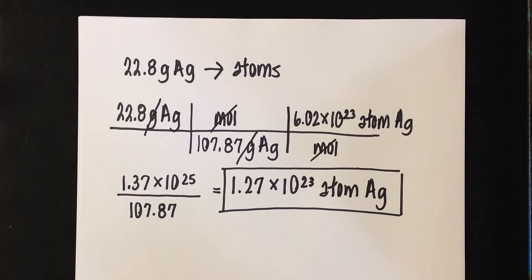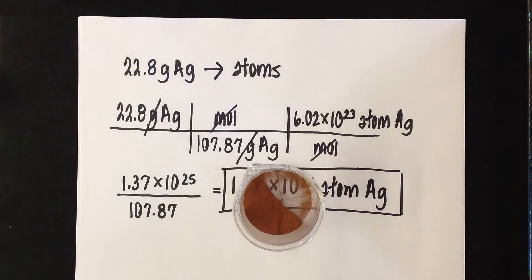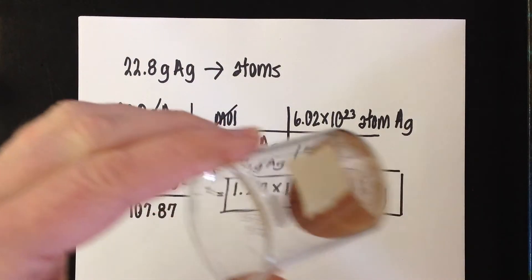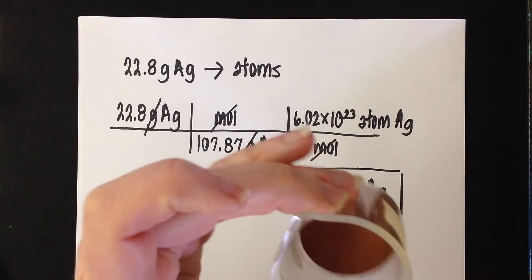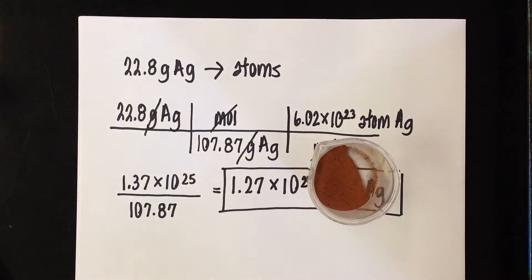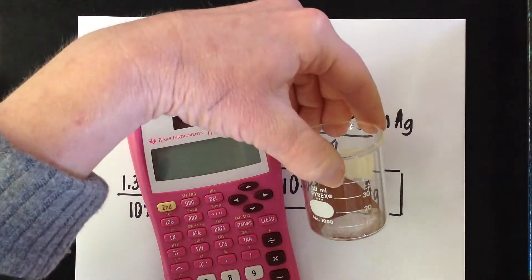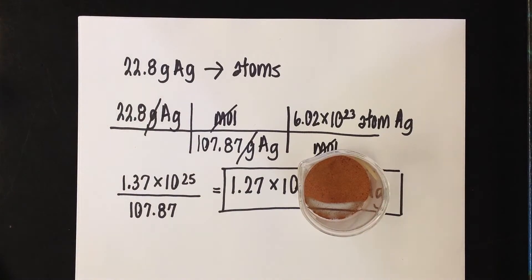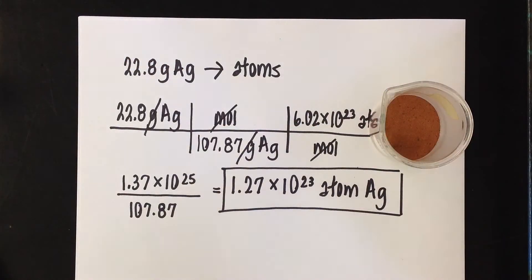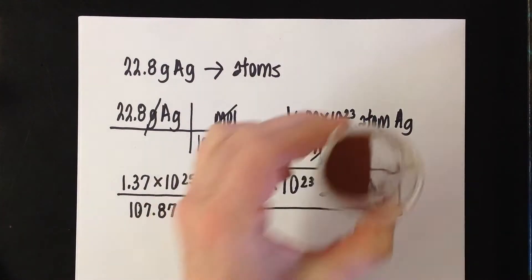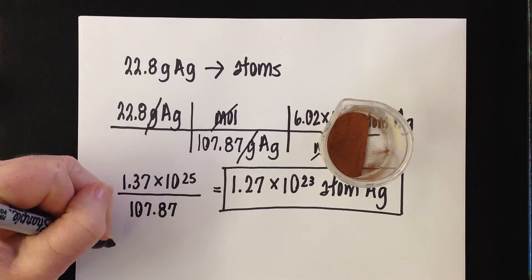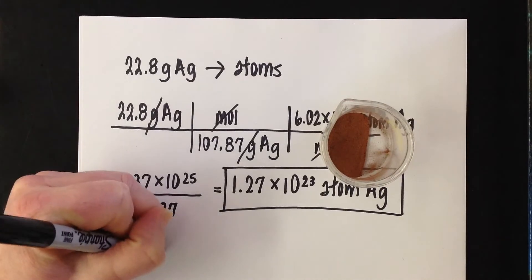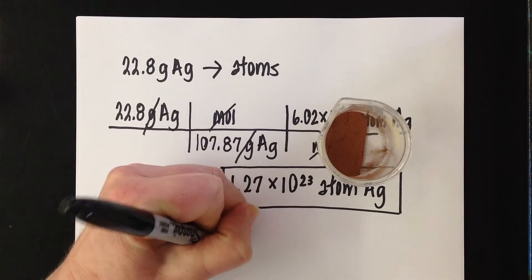Let's do one more example. I have weighed out about 15.7 grams of copper in a small 40-milliliter beaker — it's just covering the bottom of the beaker. We're going to figure out how many atoms are in it. You might think you see atoms, but what you really see is dust — we can't see individual atoms with the naked eye. So we'll use math and these conversions to find out how many atoms of copper are in the beaker. Starting with 15.7 grams of copper, how many atoms do I have?